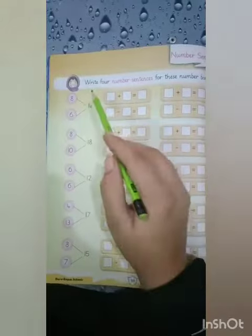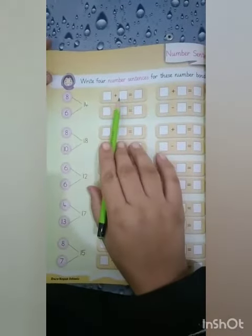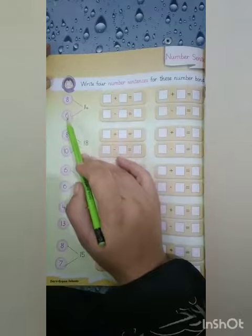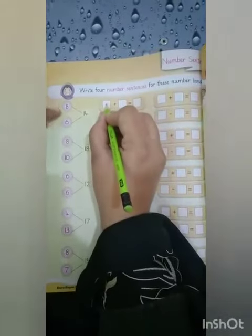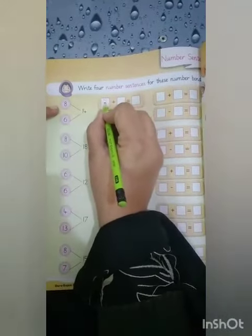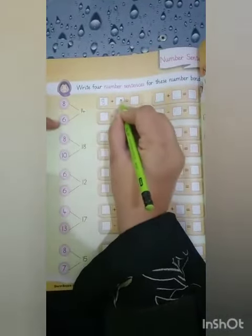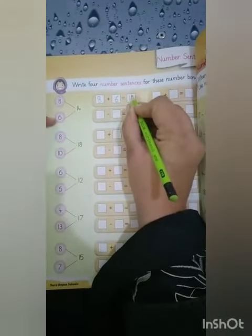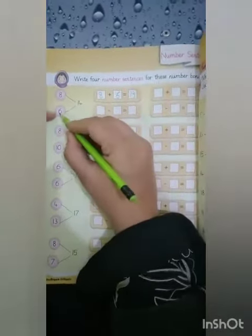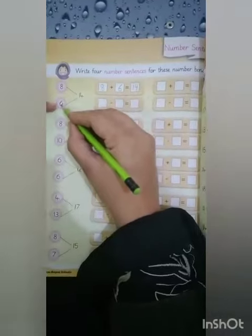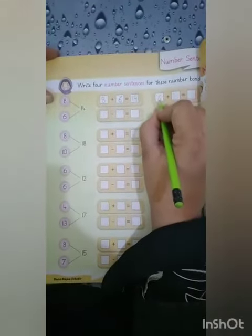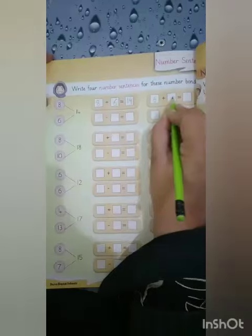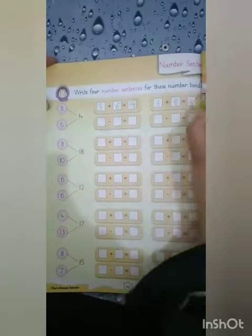Ab sab se pehle, first we add these numbers. 8 plus 6 make 14. Now it's turned to 6: 6 plus 8 make 14.